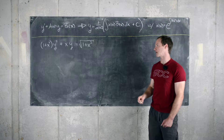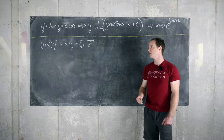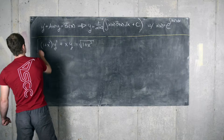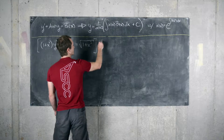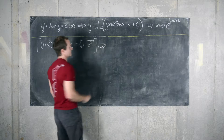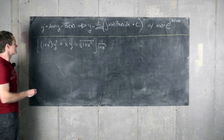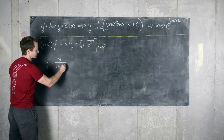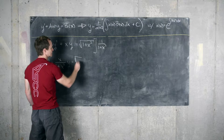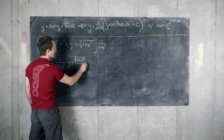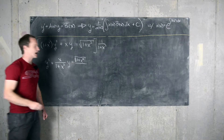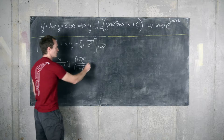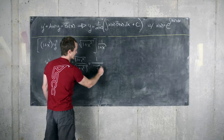As you can see, it's not quite exactly in that form. We have this one plus x squared function as a coefficient of y prime. So what we'll do is multiply the entire differential equation by one over one plus x squared on the left hand side and the right hand side. That will leave us with y prime plus x over one plus x squared times y equals the square root of one plus x squared over one plus x squared, which simplifies to one over the square root of one plus x squared.